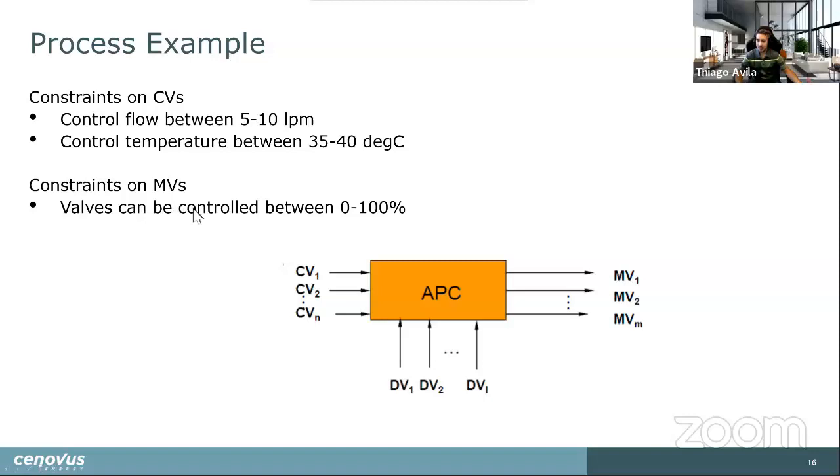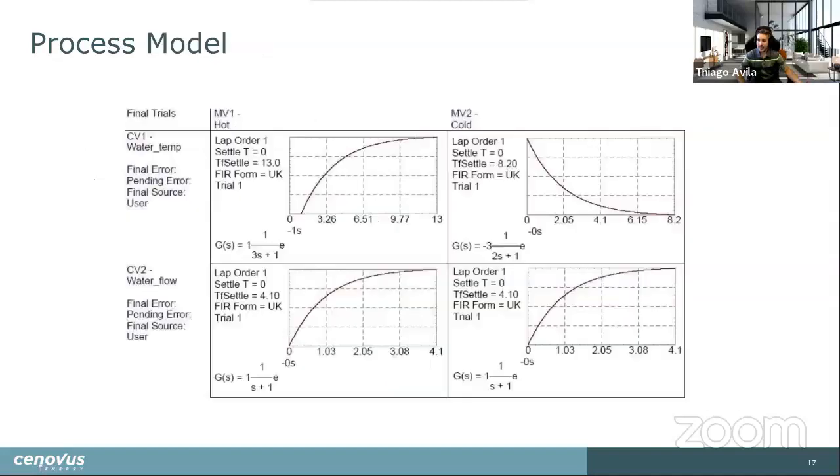So an example that's typically used in these APC explanations is a shower. You've got a pretty simple 2MV2CV system. Your two manipulated variables are the hot water and the cold water valve. And the controlled variables are the flow and temperature coming out of your shower head. So you'd end up with a two by two matrix in the APC controller. We'll set the flow between five and 10 liters per minute and the control temperature between 35 and 40 degrees. And the MVs, each valve can be open 0 to 100 percent. And if you step test your shower, you might end up with models that look like this. These are all Laplace transforms. The Laplace transform allows you to characterize the dead time, the dynamics of how long it takes to actually rise and react, and then the settling time.